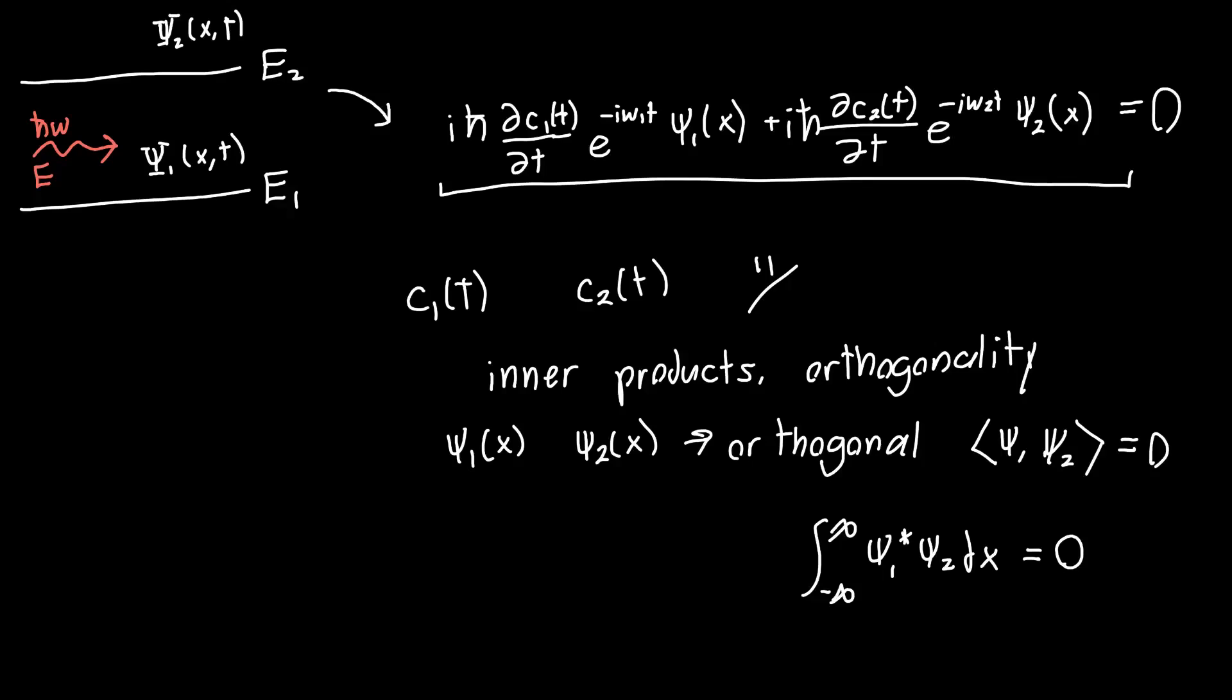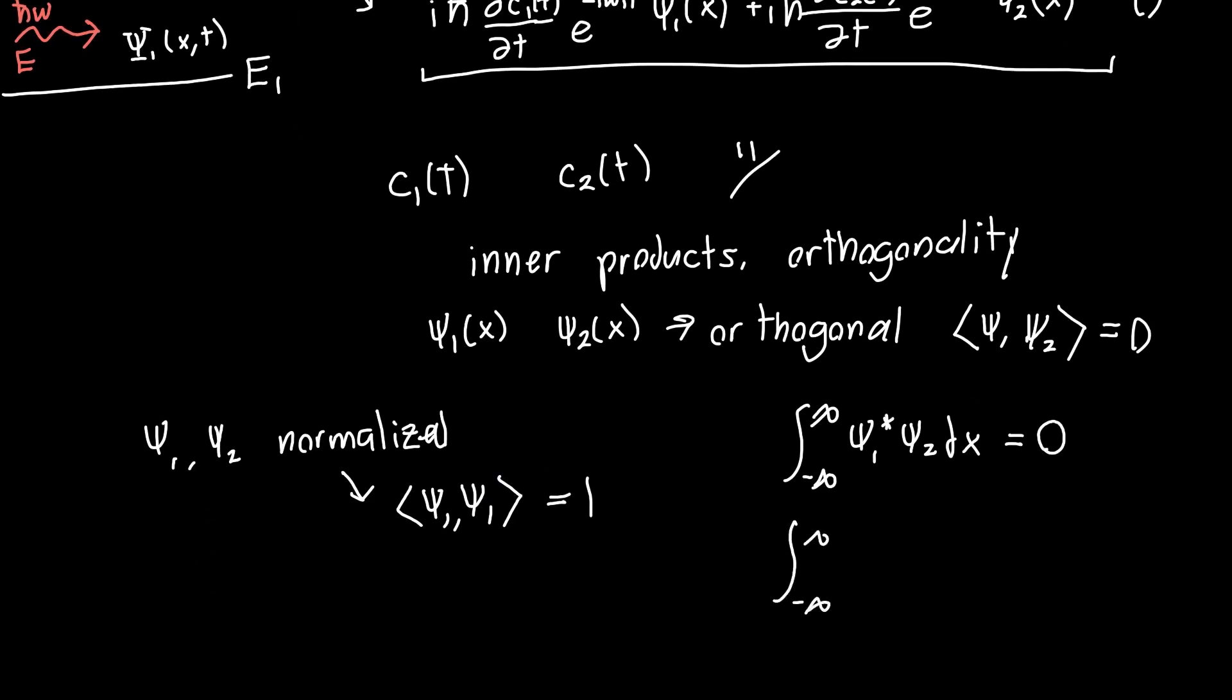And if psi1 and psi2 are properly normalized, which we hope they would be because we're using them in the Schrödinger equation, then we know that the inner product of psi1 with itself, ⟨psi1, psi1⟩, is equal to 1. And you can also get that from the integral, so the integral of psi1 conjugate times psi1, this is just the integral of the magnitude squared of psi1 over all space, which we interpret as integrating the probability distribution. So probability is a function of x, and if you integrate the probability distribution you should get 1. And similarly, ⟨psi2, psi2⟩, their inner product should also be 1.